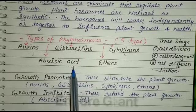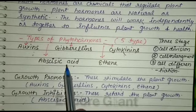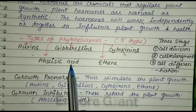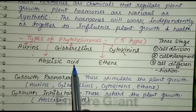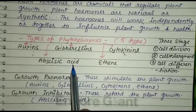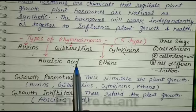The next hormone is abscisic acid. Abscisic acid is a plant hormone which functions mainly as a growth inhibitor. Abscisic acid promotes dormancy in seeds and buds. It also promotes the closing of stomata and promotes wilting and falling of leaves. It also causes the detachment of flowers and fruit from the plant.